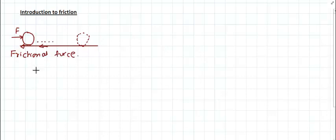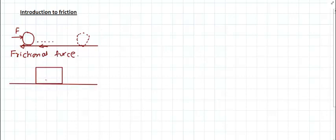Let's take another example. We have a block of some mass placed on a rough surface — let's say 12 kilograms. Our observation is that when I apply a small force onto this block, let's say a force of 1 newton, the block doesn't move at all.